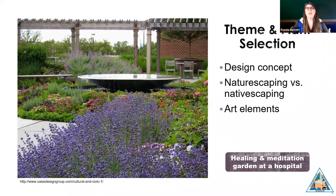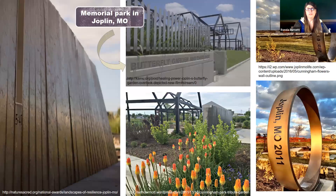Now let's consider how a theme might influence your plant selection. We'll look at a few design concepts, the strategy of naturescaping versus nativescaping, and some of the art elements most useful for garden and landscape design. The photo on this slide shows a healing and meditation garden at a hospital. Every element in this garden was selected to achieve those results — the cool colors of the plants and the water feature all work together to meet that project objective.